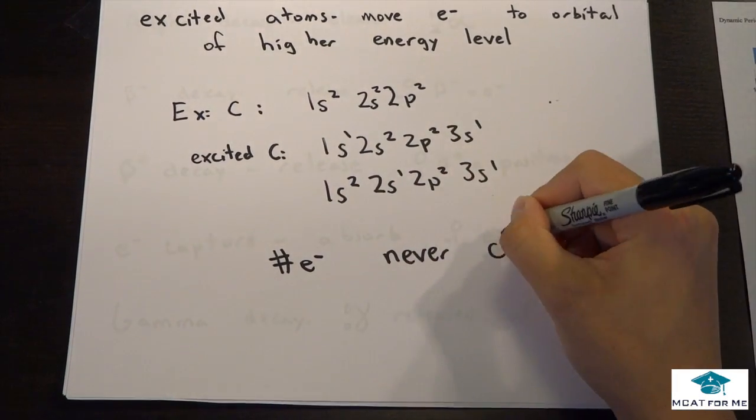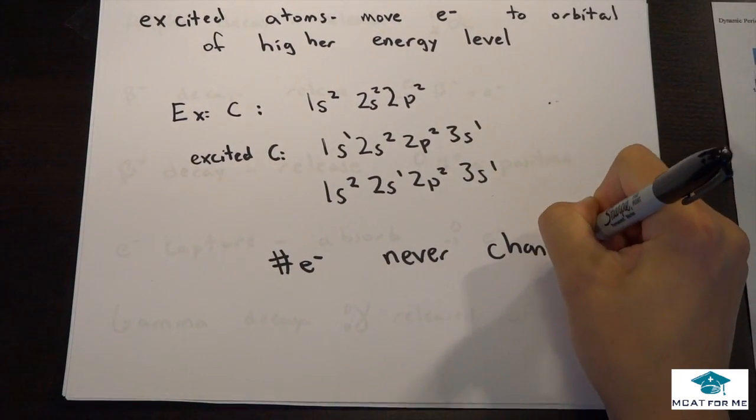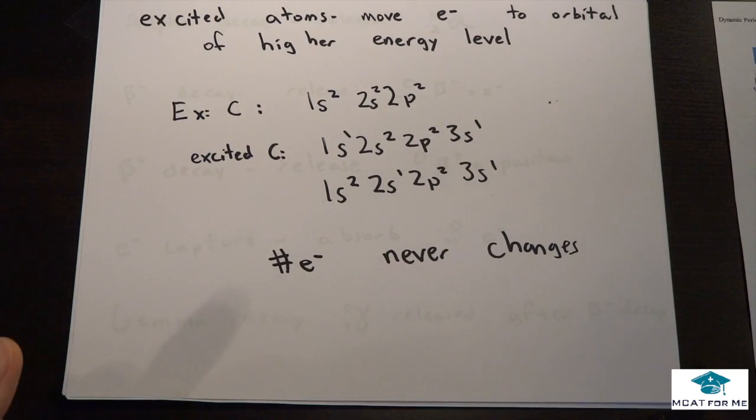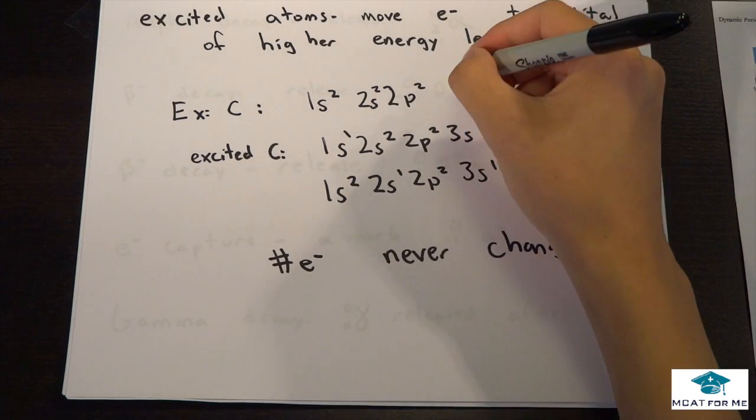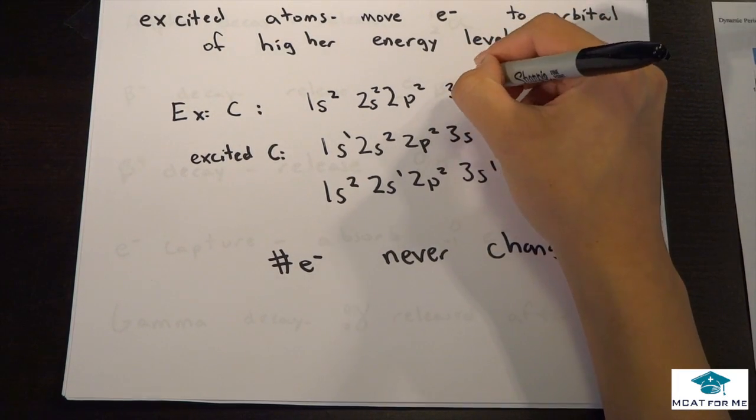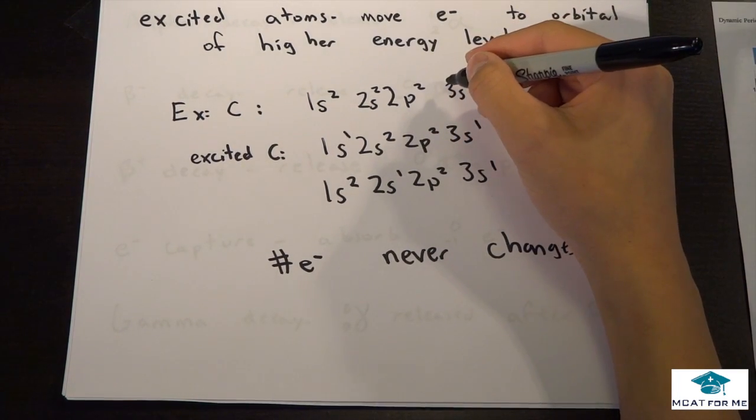The number of electrons never changes. That's one thing that you have to remember. There are a lot of times I'll give you examples of which one is excited, which one is not. More than likely, two out of the four will show electrons where they just add an entire electron.